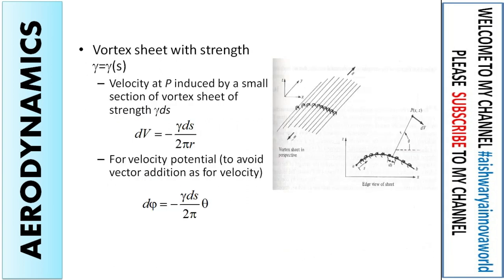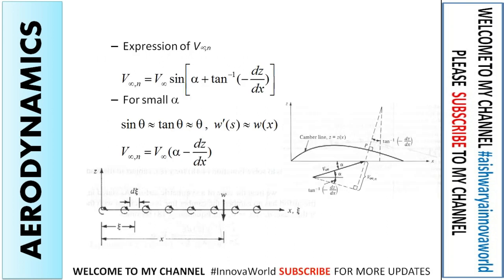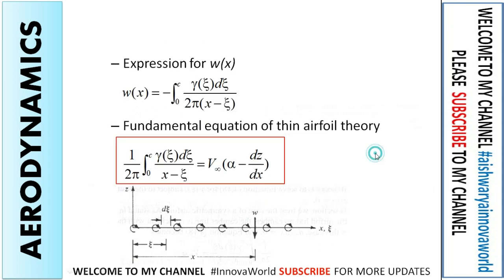From the general vortex equation, the velocity induced by a small section of a vortex is minus gamma ds over 2 pi r. Applying this formula, as the figure represents, we can write the fundamental equation of thin airfoil theory.